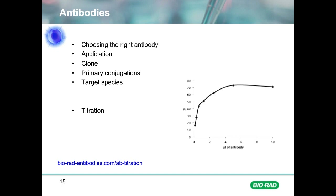When you find the right antibody, be sure to titrate it in order to get the highest stain index. In its simplest terms, the stain index is the difference between the positive and negative populations. This will help with the identification of populations in your analysis, and will save you money as you'll use less antibody. For more information on titration, go to bioradantibodies.com/titration.